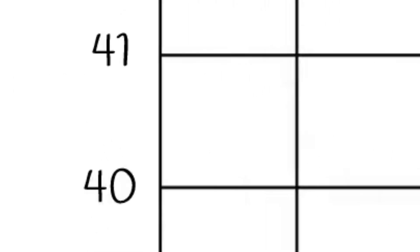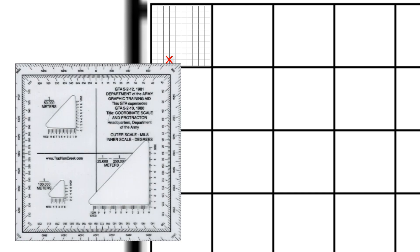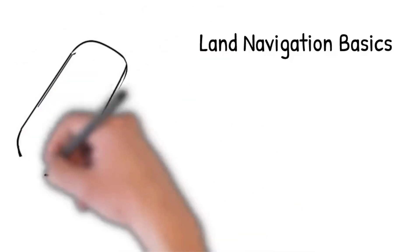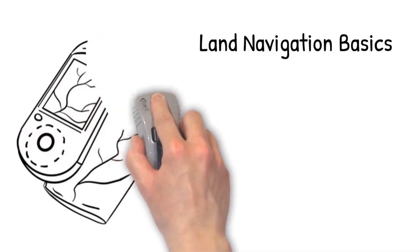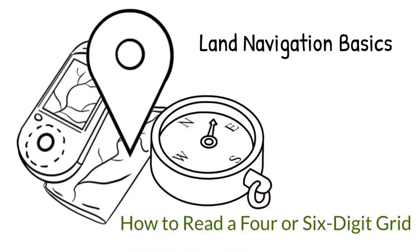An eight-digit grid, which is commonly used in the military, is just the same as plotting a four or six-digit grid, except you break the square down another 10 marks, getting a more exact location. This is usually performed with a protractor. We hope this lesson will have you plotting points like a champion at your unit. Thank you for joining us and hope to see you next time. If you have recommendations for future videos, please let us know in the comments below.